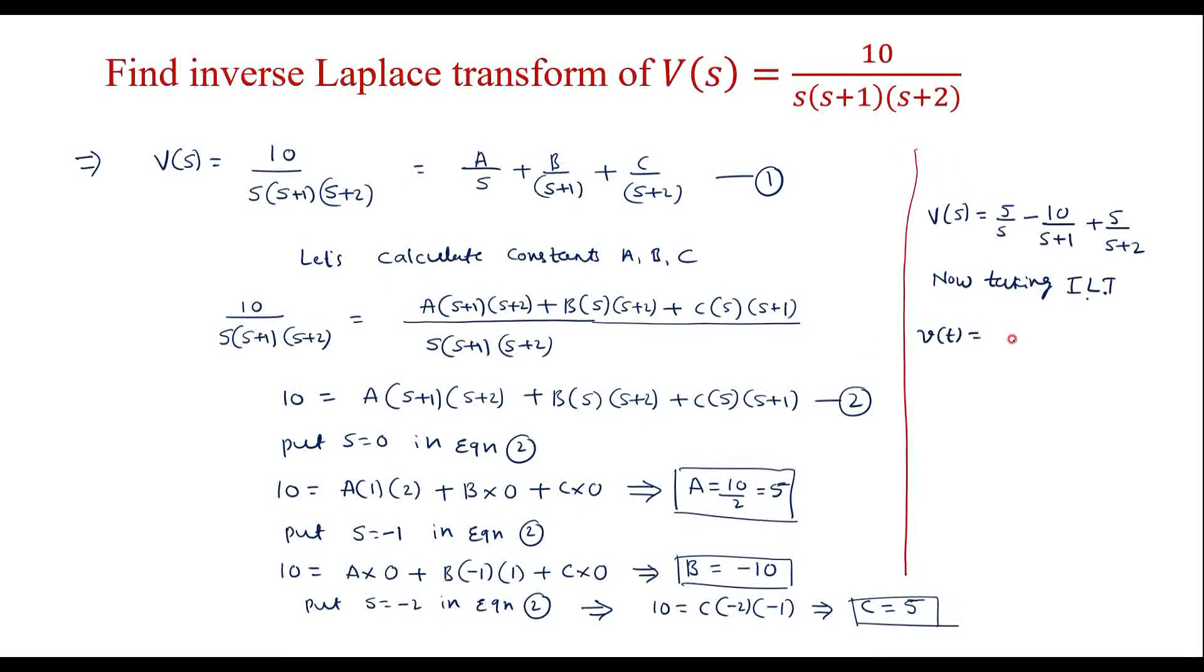V(t) equals inverse Laplace transform of 5/s, which is 5, minus 10/(s+1), which is -10e^(-t), plus 5/(s+2), which is 5e^(-2t). This is the inverse Laplace transform of the given expression.